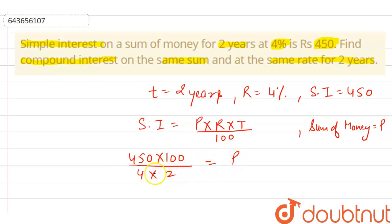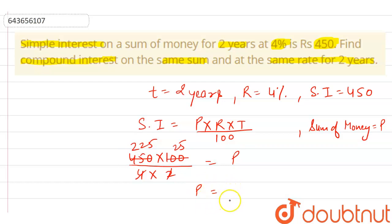From here we can find P. Solving this: 4 cancels with 100 giving 25, and 2 cancels with 450 giving 225. Multiplying 225 by 25 gives us our principal amount P as rupees 5625.